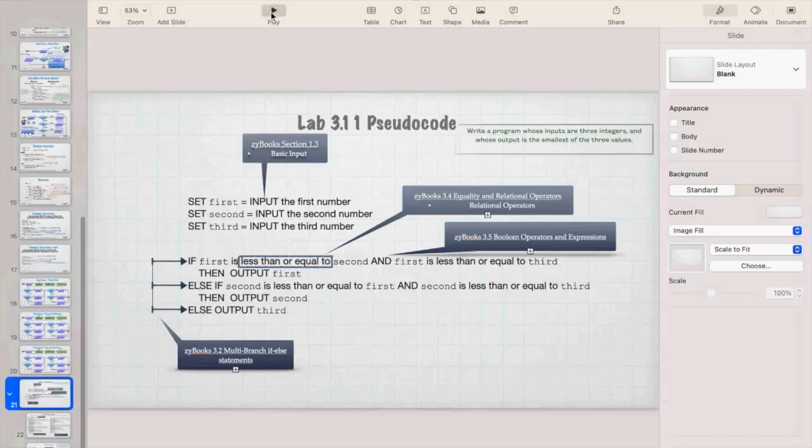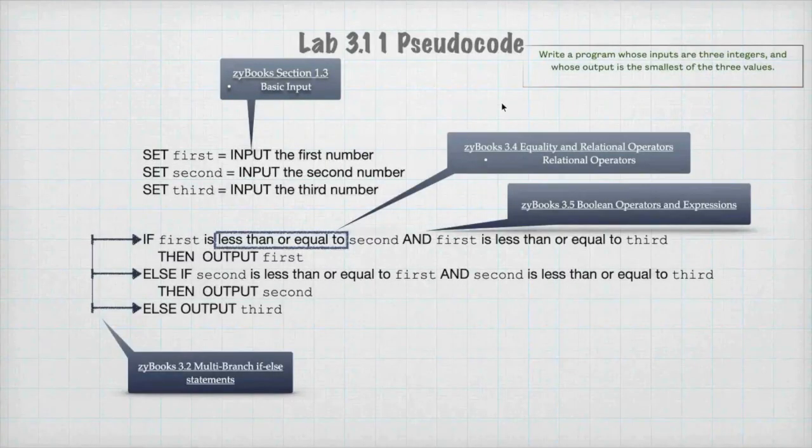Here we have lab 3.11 and it's write a program whose inputs are three integers and whose output is the smallest of the three integers. This is a prime use of the word and, of the boolean operator and. And this is pseudocode. You're going to have to turn in pseudocode and flowcharts. It's time to start talking about pseudocode because a lot of people like it.